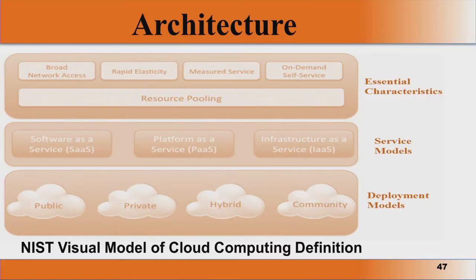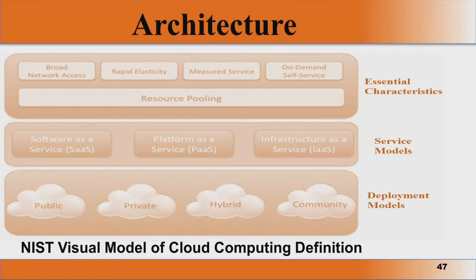Just based on these three parameters — characteristics, service, and deployment — the entire cloud architecture can be viewed as shown in the slide. This is the NIST visual model of cloud computing definition. There are certain essential characteristics like broad network access, rapid elasticity, measured services, on-demand self-service, and resource pooling. These are all essential characteristics that we expect from the cloud.